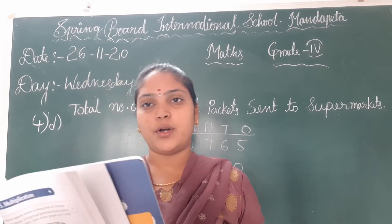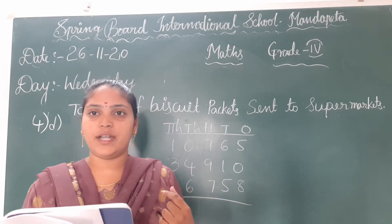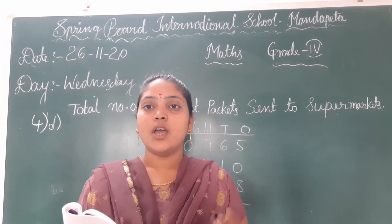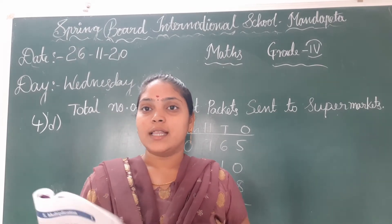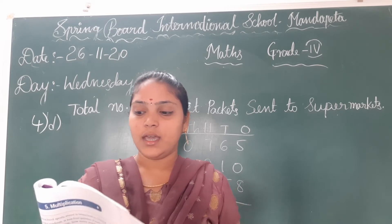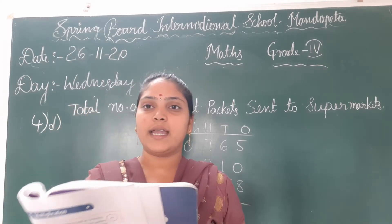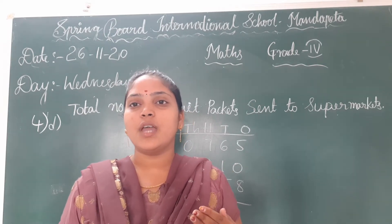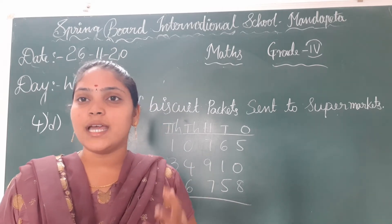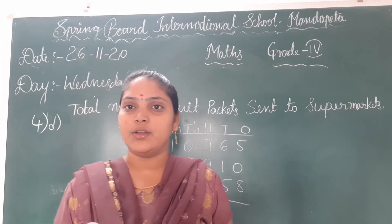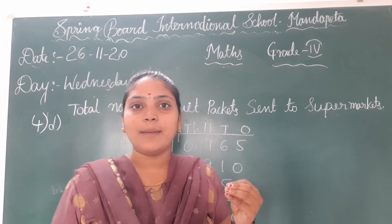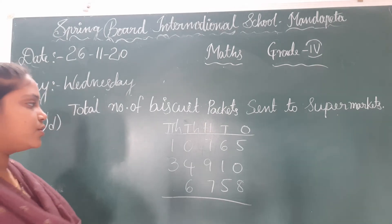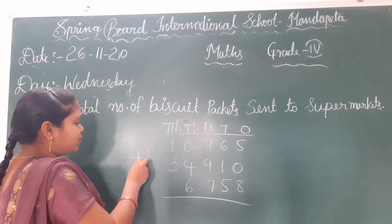The biscuit factory produces some biscuits every day and sends them to 3 supermarkets. You have to find how many biscuits are left. To calculate the number of biscuit packets left, this is the same model problem. First, you have to find the total number of biscuits sent to the supermarket — the total number of biscuit packets sent.